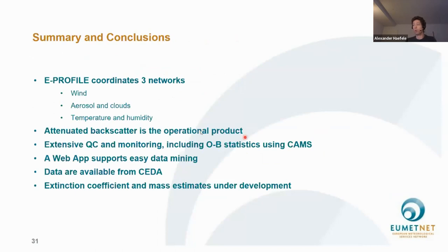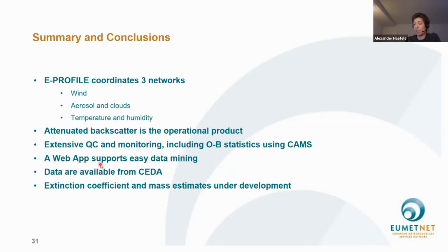To conclude: E-PROFILE coordinates three different networks — one dedicated to upper-air winds, one to aerosols and clouds, and one to temperature and humidity. For the aerosol and cloud network, attenuated backscatter is the operational product as of today. We perform extensive quality control and monitoring, including observation-minus-background statistics using CAMS, to ensure good data quality. We operate a web application that facilitates easy data mining and exploration, and the data can be accessed from the CEDA archive. We are currently implementing a new processing chain to produce also extinction coefficients as well as mass estimates. Thank you very much.